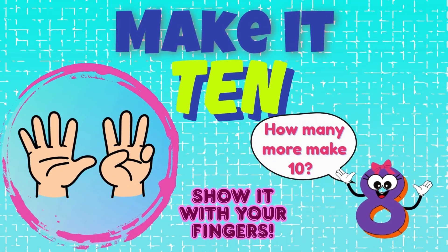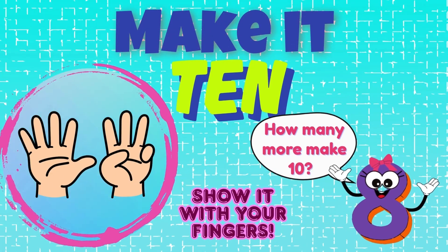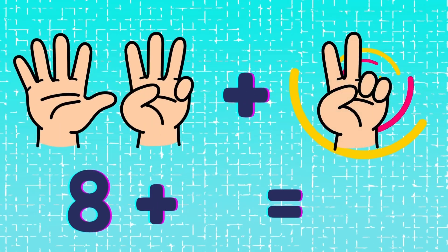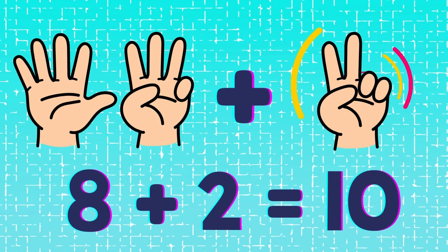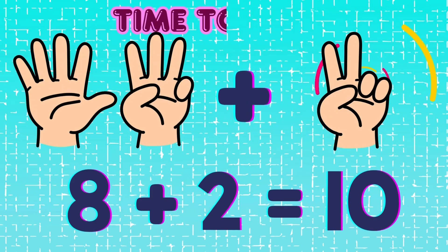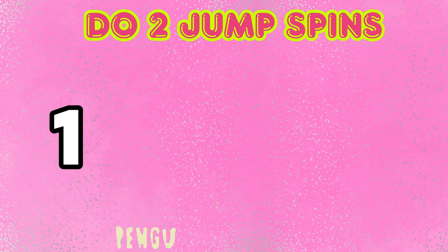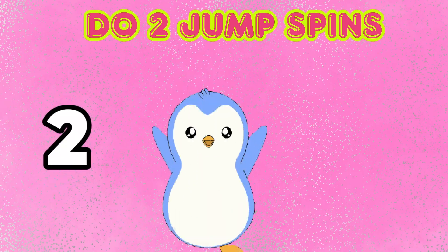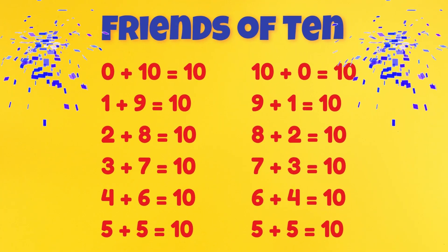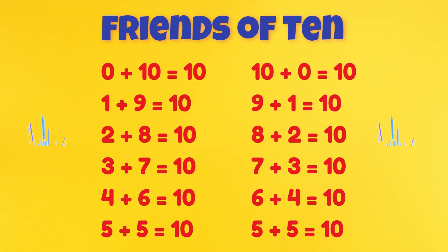What do I have to add to eight to make ten? Did you say two? That's it — we did it! Let's do two jump spins and we're done. Here are all the friends of ten!